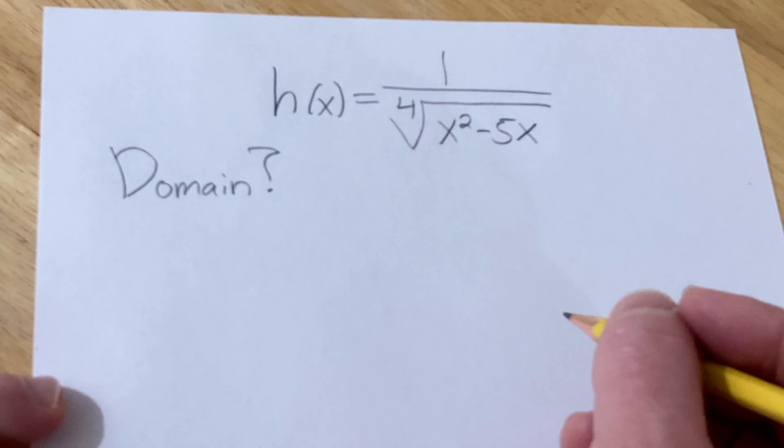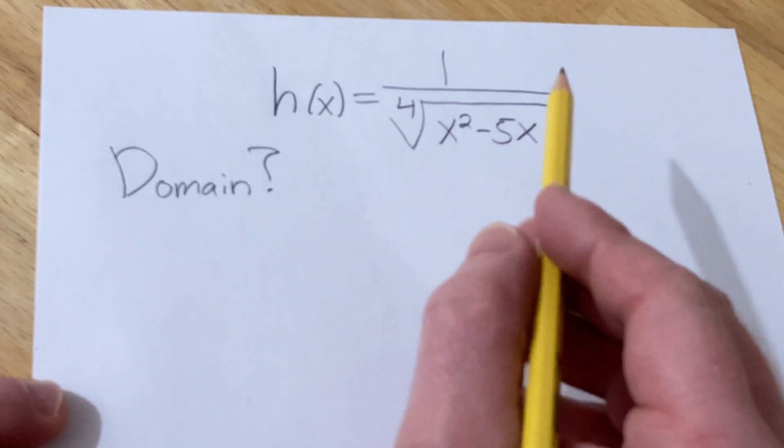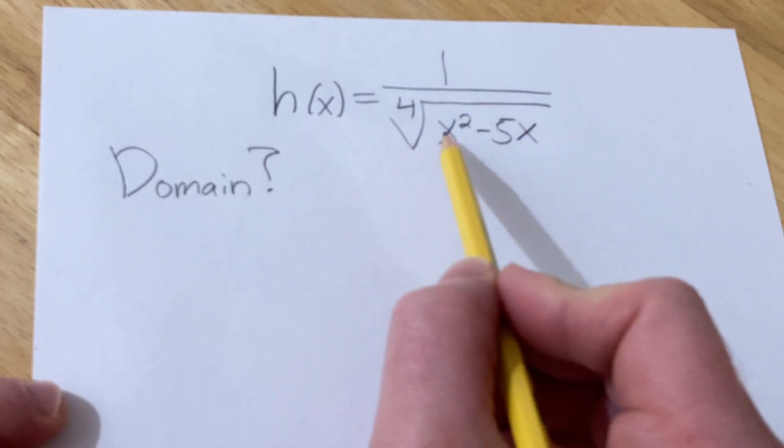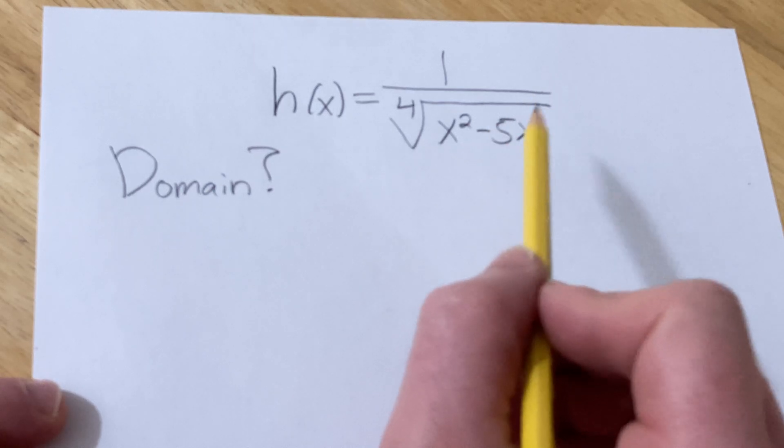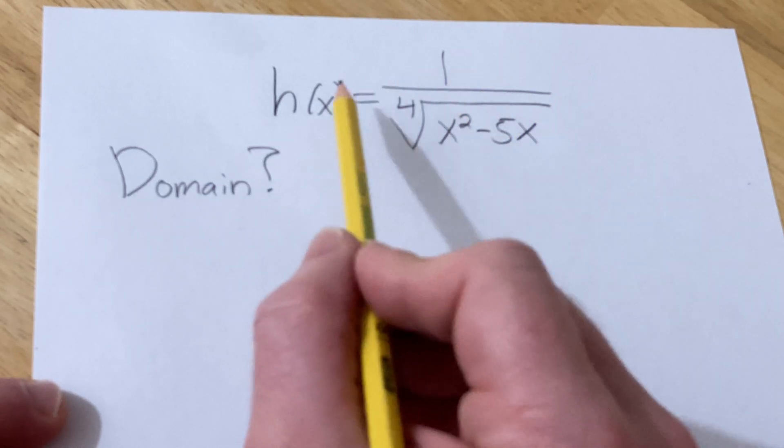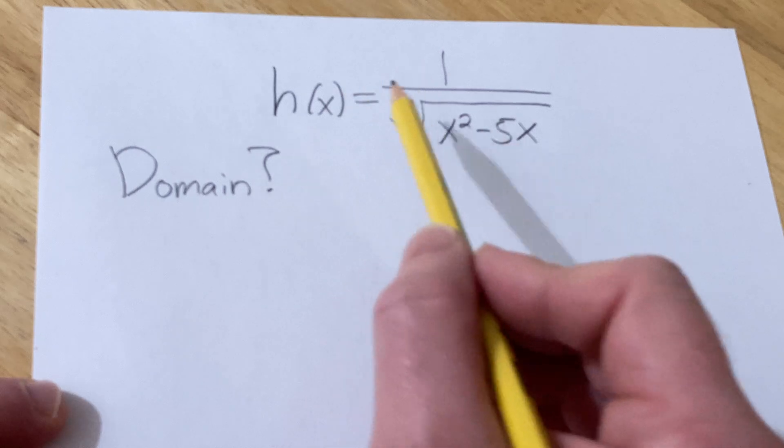Hello, in this video we're going to find the domain of this function. We have h(x) equals 1 over the fourth root of x squared minus 5x. The domain is the set of all inputs that you can plug into this function and the function will make sense.